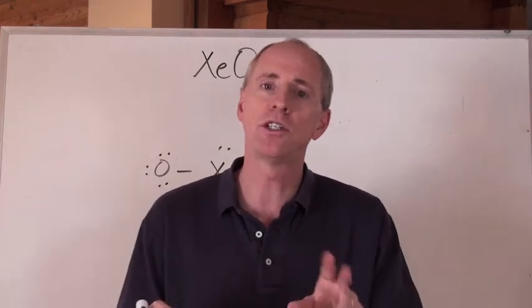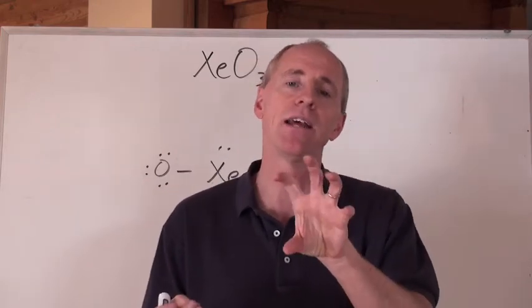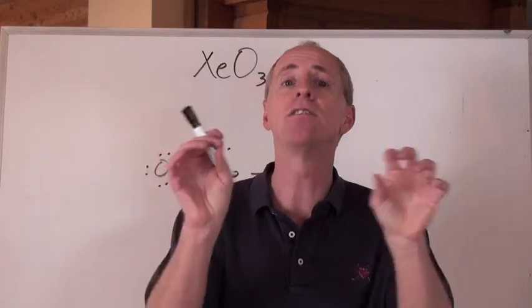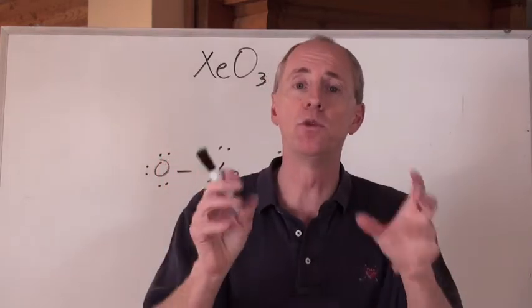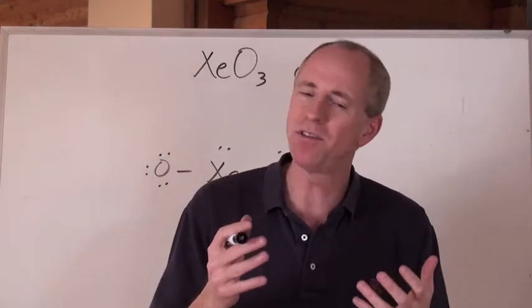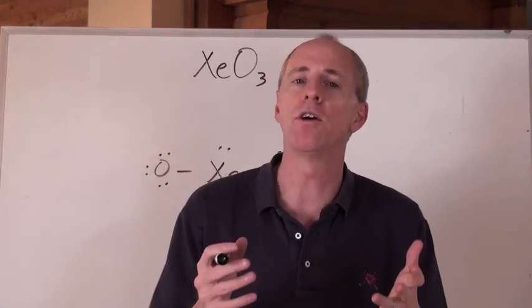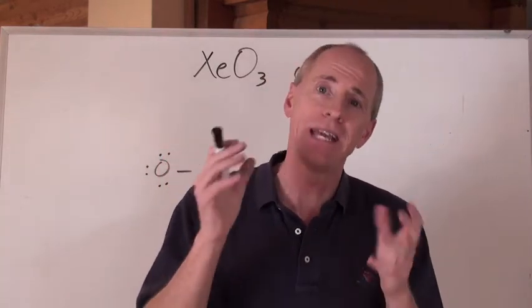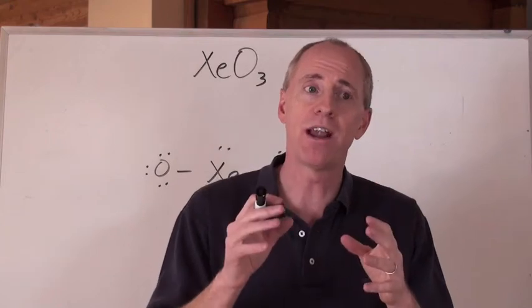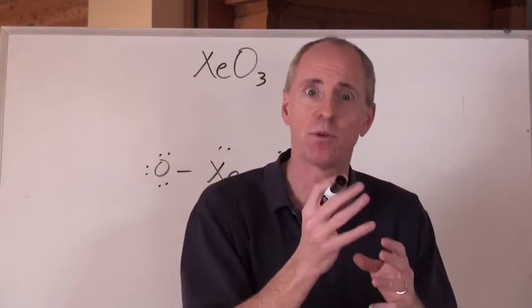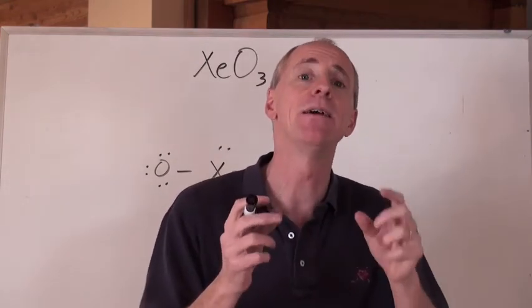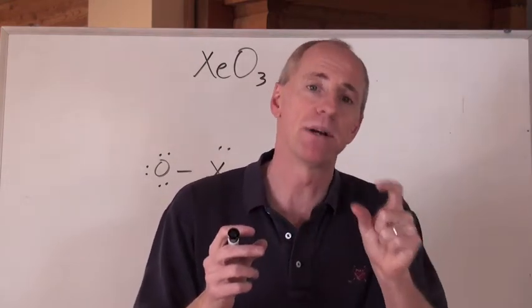Try to give the central atom as many bonds as its group number. And sometimes if it's got a lone pair, what you have to do is just keep the lone pair there and fill up the rest of the bonds to make the group number.